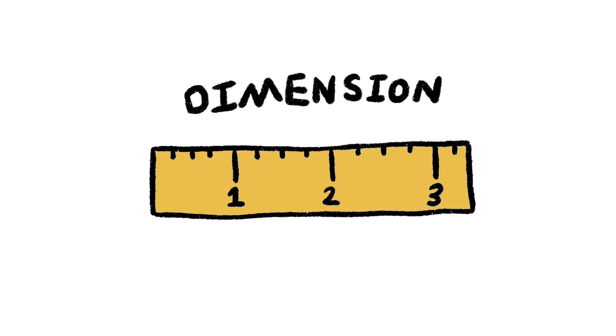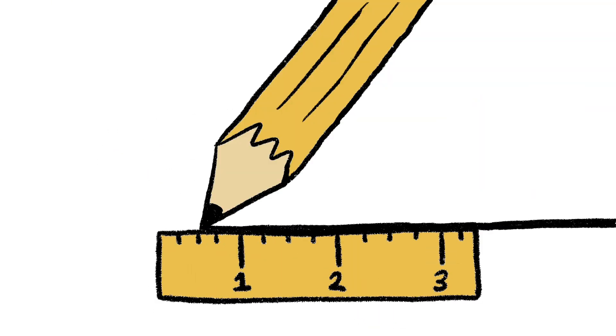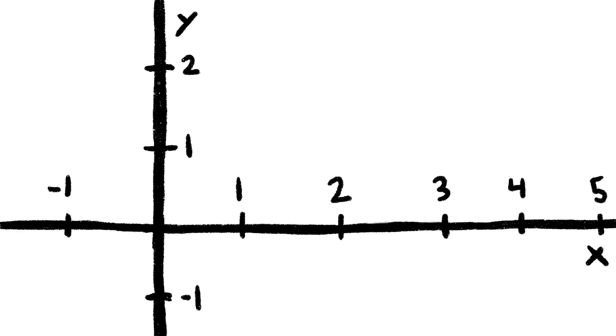When a physicist says dimension, we're referring to a measurement, typically of space. We can represent each dimension as a variable and geometrically as a line. When we have multiple dimensions, these are independent measurements.